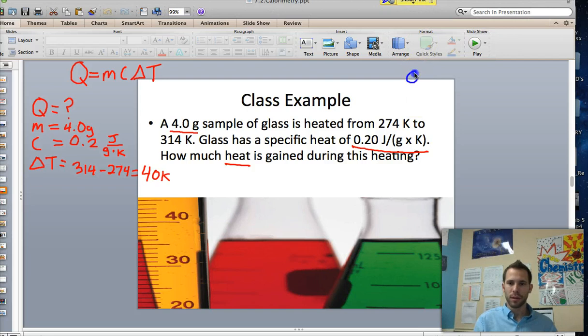So in this case, Q equals 4, which is grams, times C, which is 0.2 joules per gram Kelvin, so we know grams would cancel out, times 40 Kelvin, the change in temperature, delta T.